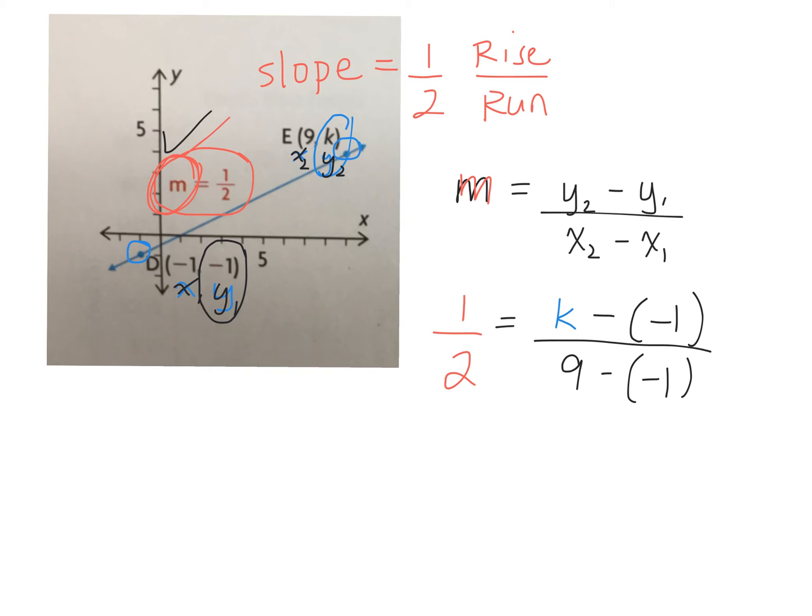Okay, we need to isolate K now. I have 1 over 2 equals, let's simplify this. K take away negative 1 becomes K, a negative and a negative makes a plus 1. And we have 9 take away negative 1. That becomes 9 plus 1. What's 9 plus 1? 10. Okay, that's all we can do right now. I can't add K plus 1 together. Can I? No, they're not like terms.